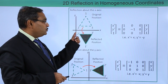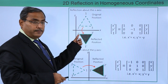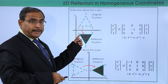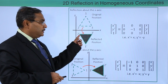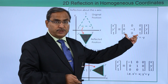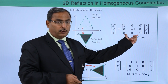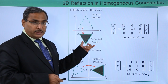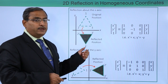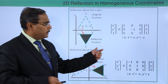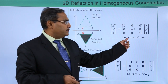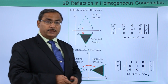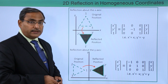The x values will remain the same, but the y will get negative in that case. Here is the transformation matrix for reflection along the x-axis in homogeneous coordinates. Here you see x' is equal to x and y' is equal to minus y.